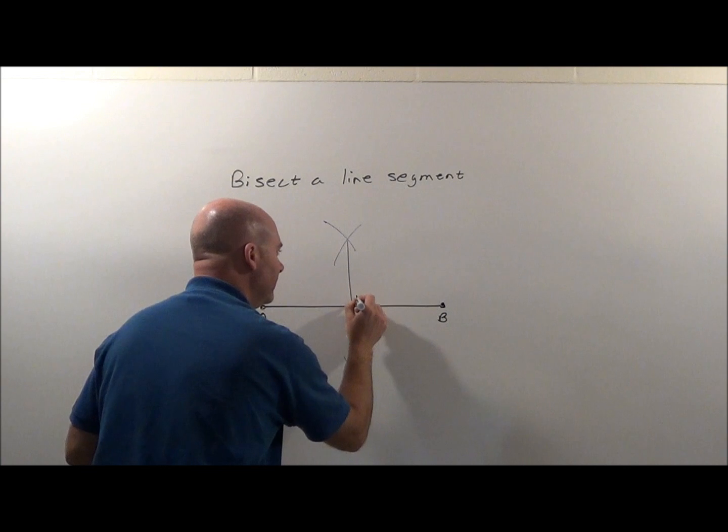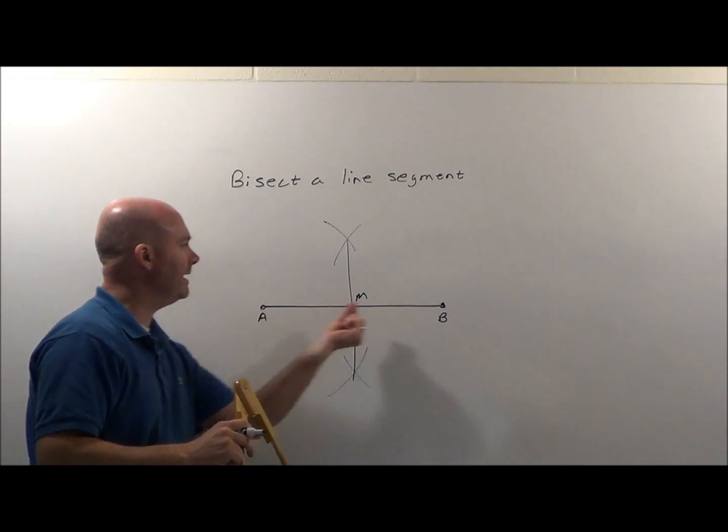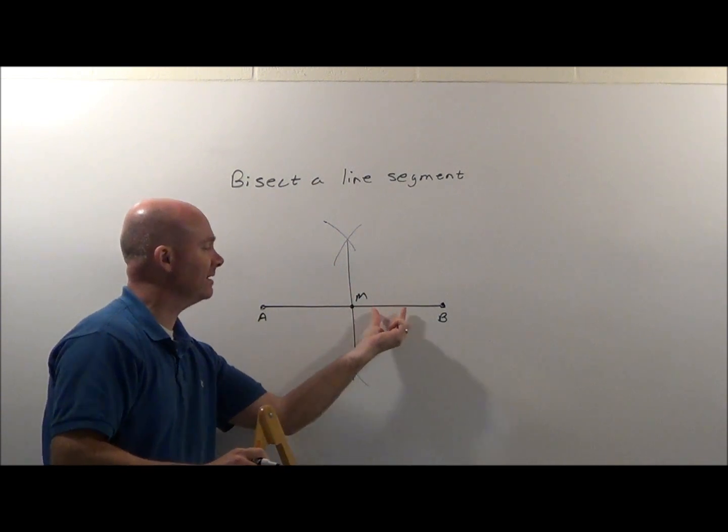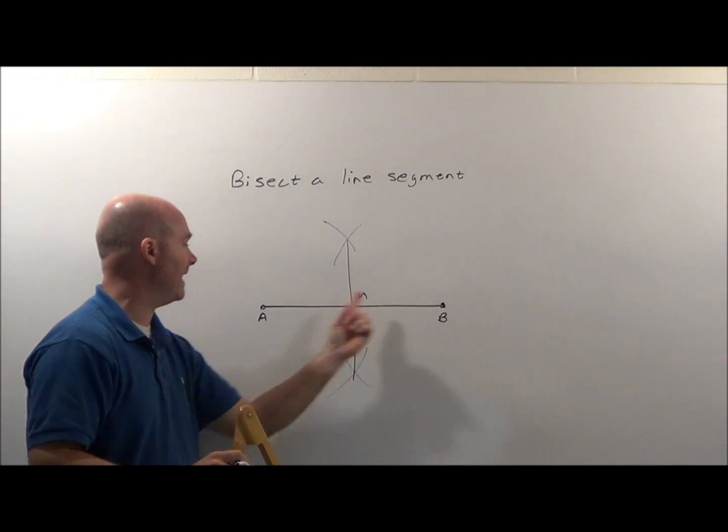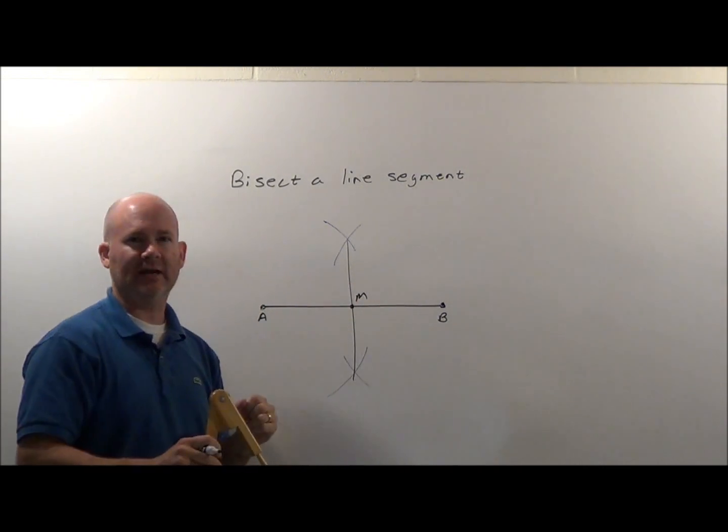Right here would be the midpoint, that would be the middle point between A and B, because this line bisects it, cuts it into two equal parts. If this AB happened to be 12 inches, this part now 6, and that part is now 6.